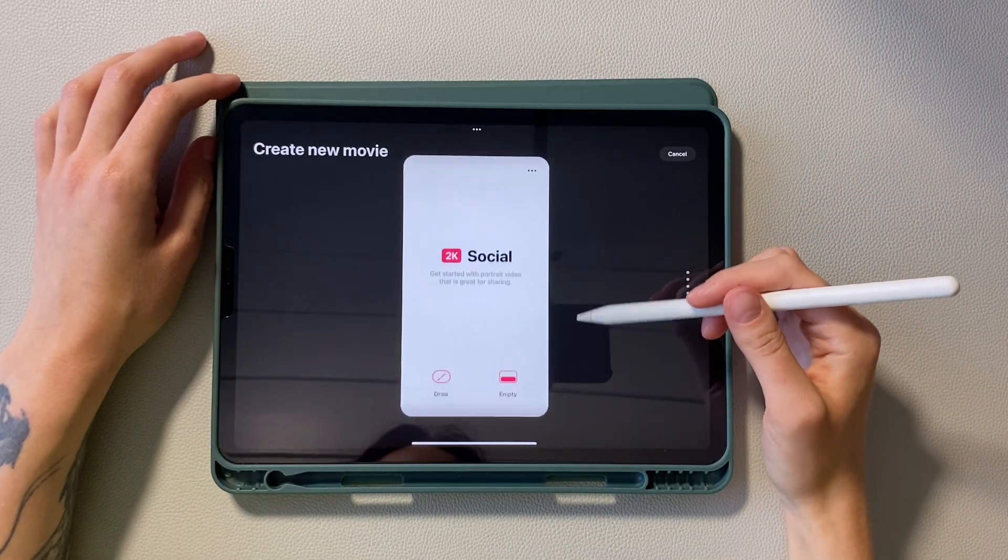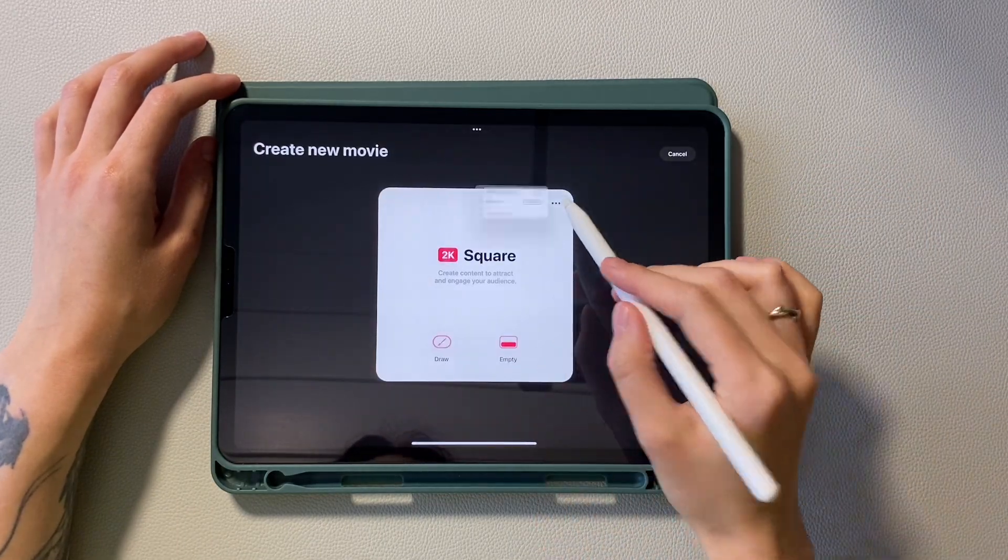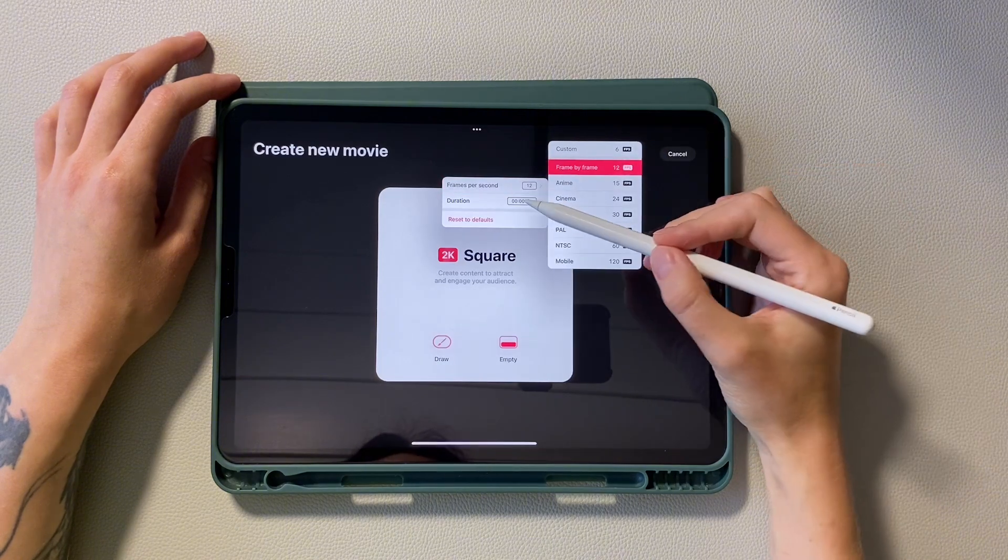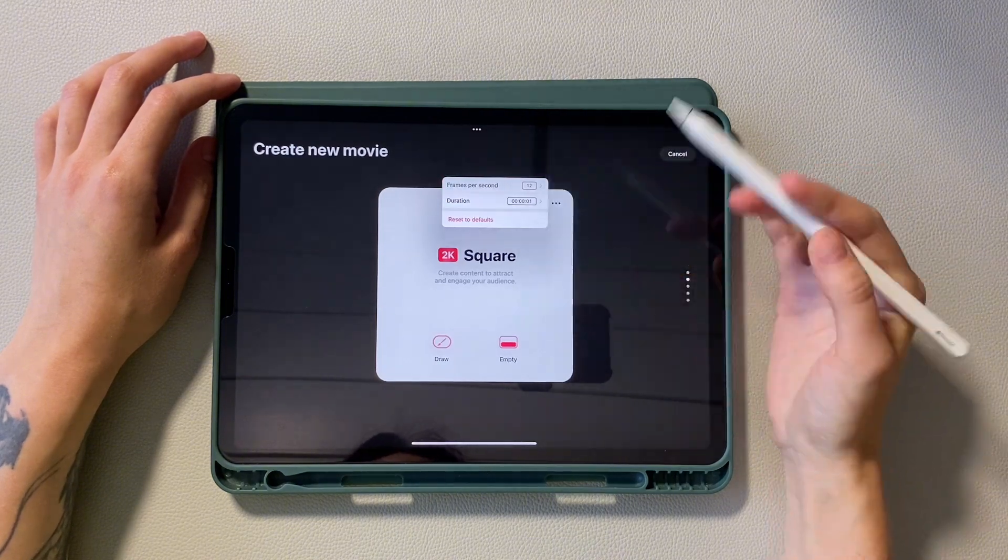First, create a file. From the template library I choose square. Set frames per second to 12 and duration to 1. Click draw.